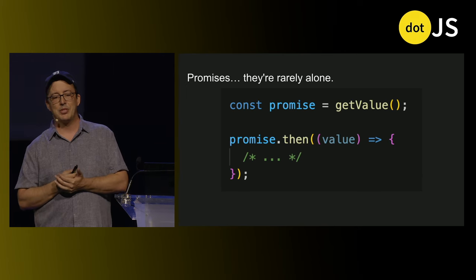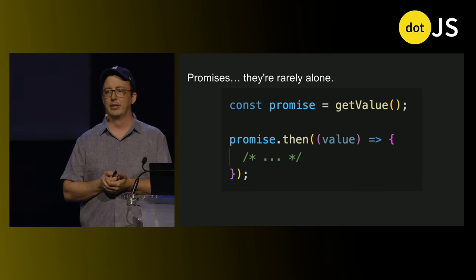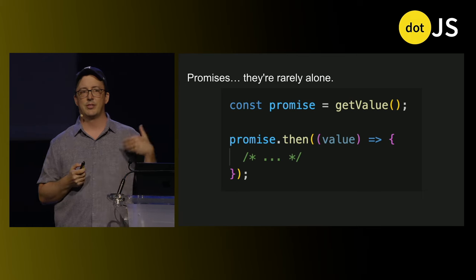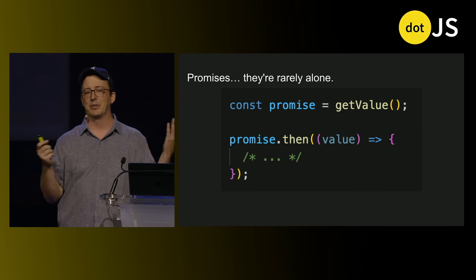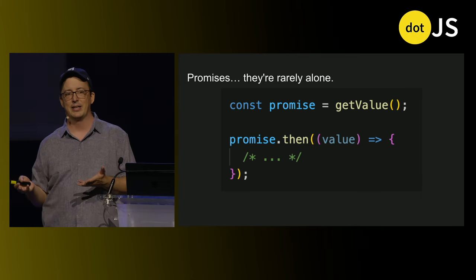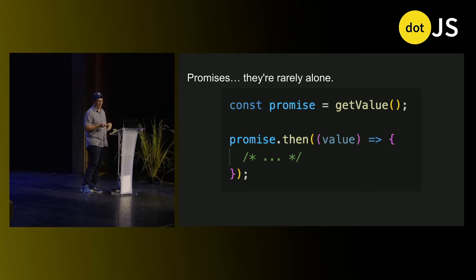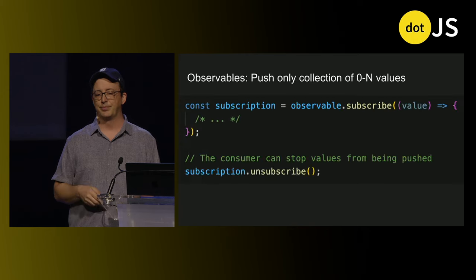Promises are rarely alone — it's not often that you make a promise and just use it right now. Usually you're returning a promise from a function, almost always. So you pull and then you push.